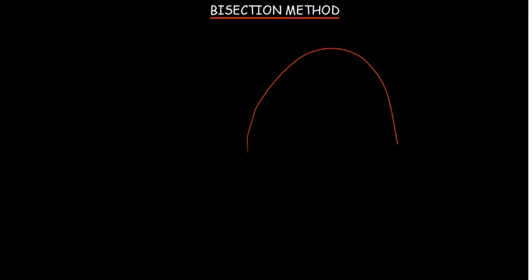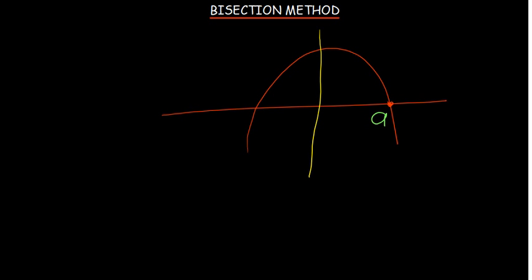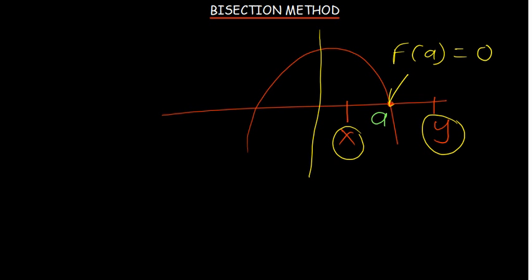Let's go over the bisection method. This method is a way to determine the root of an equation when you're given the domain where it's supposed to lie. They give you two points — let's call them x and y — which are the bounds where the root lies. At the root, we expect f(a) = 0. The bisection method helps us find the value closer to that root.